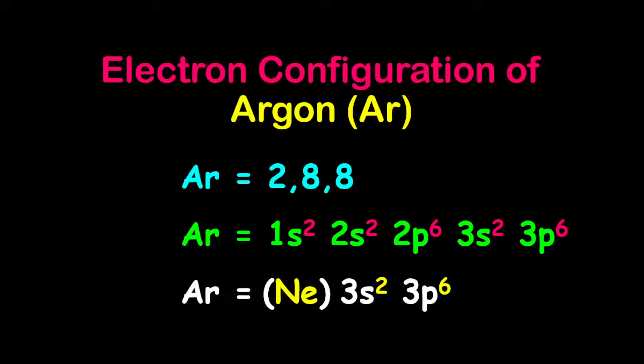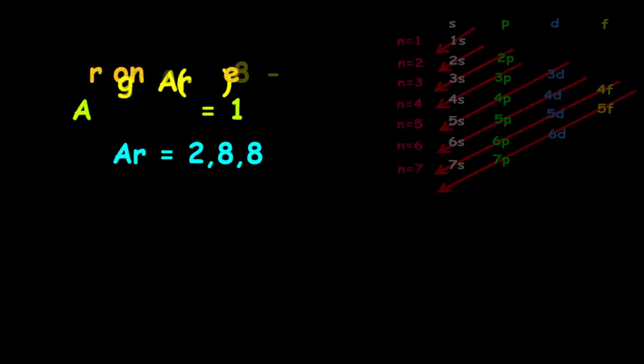The electron configuration of argon. Argon has 18 electrons.